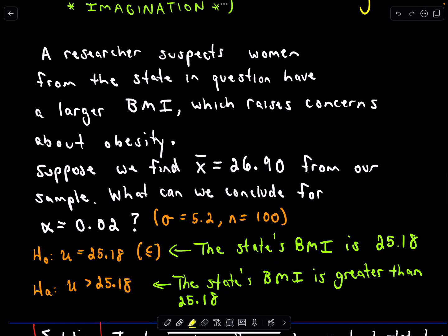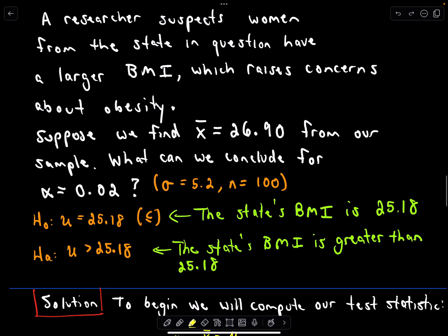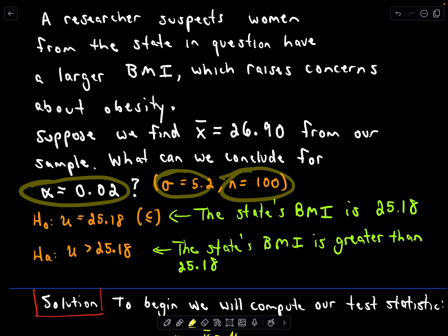Now suppose that we compute our average from our 100 data points to be 26.90. That's our sample BMI. What can we conclude at the level of significance alpha equals 0.02? We know our standard deviation, we have our value of n.